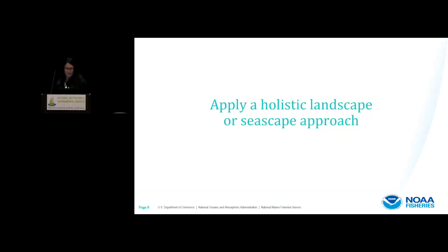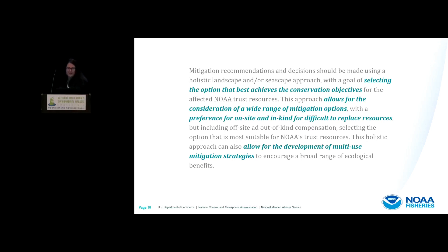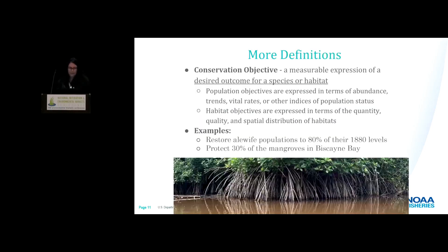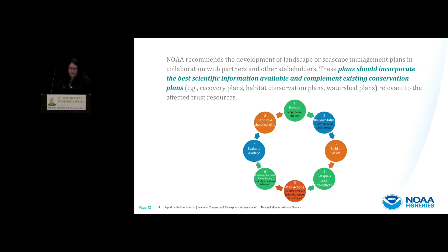So what does our policy say about landscape-seascape? It is to apply a holistic landscape or seascape approach. The policy outlines selecting the best options that achieve conservation objectives, allowing for consideration of a wide variety of mitigation options, prefacing in-kind compensation for difficult-to-replace resources. Such a holistic approach can allow for the development of multi-use mitigation strategies. A conservation objective is the measurable expression of a desired outcome that can be either species or habitat-focused. NOAA recommends developing landscape or seascape management that incorporates the best scientific information available and complements existing conservation plans, and the management plan should be open to collaboration with partners and stakeholders.